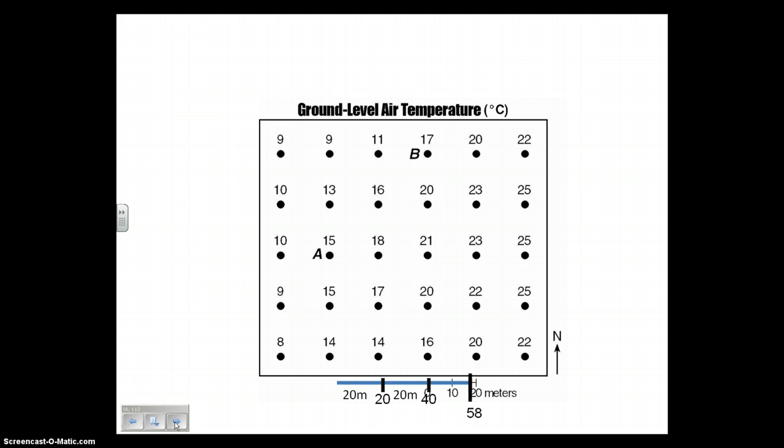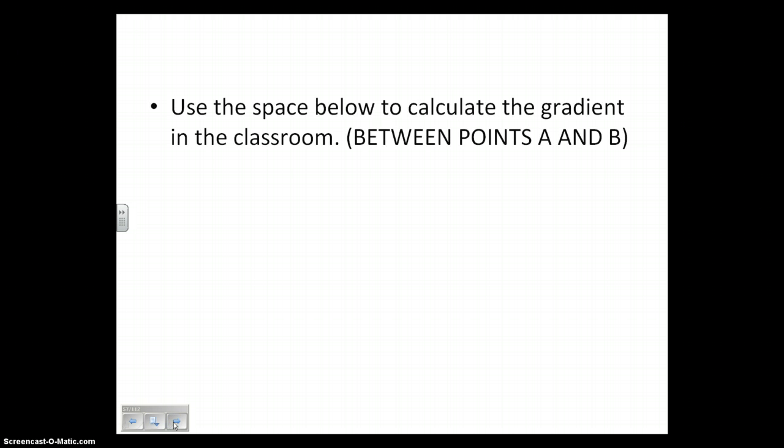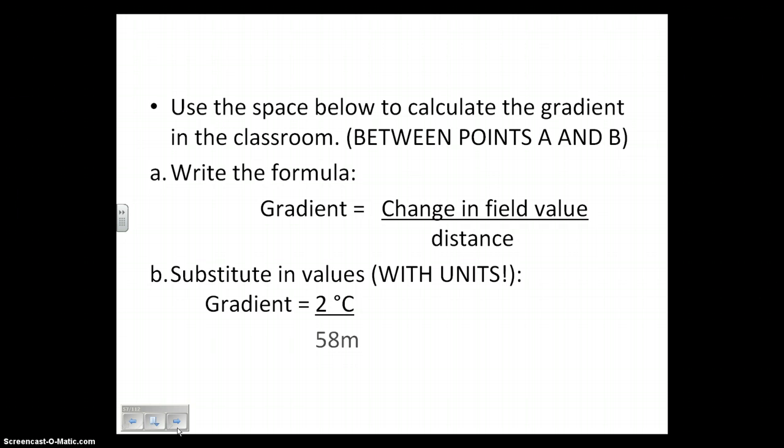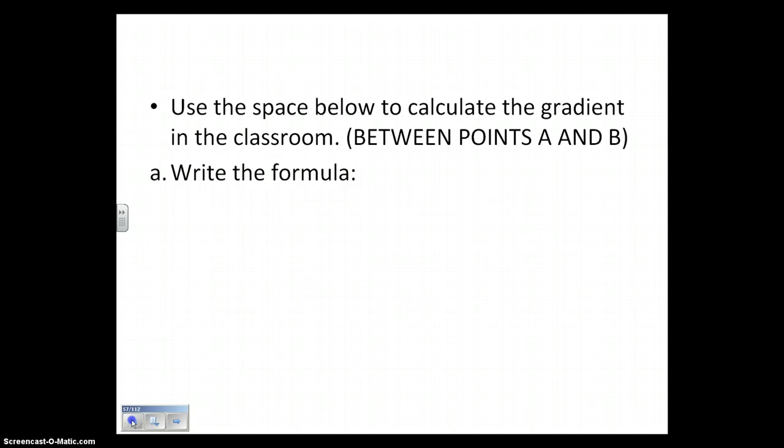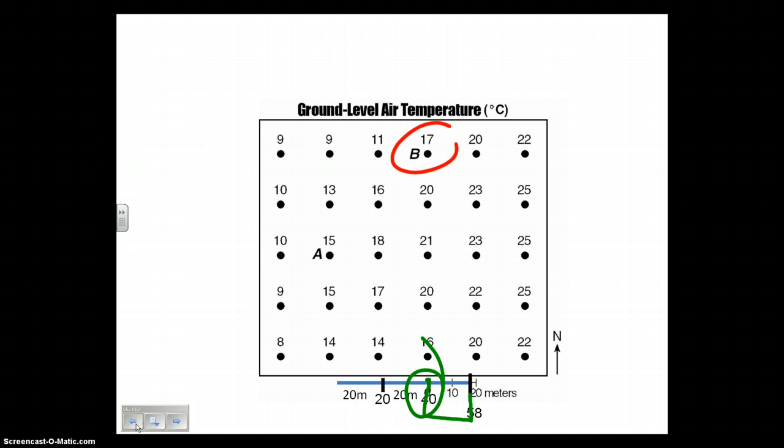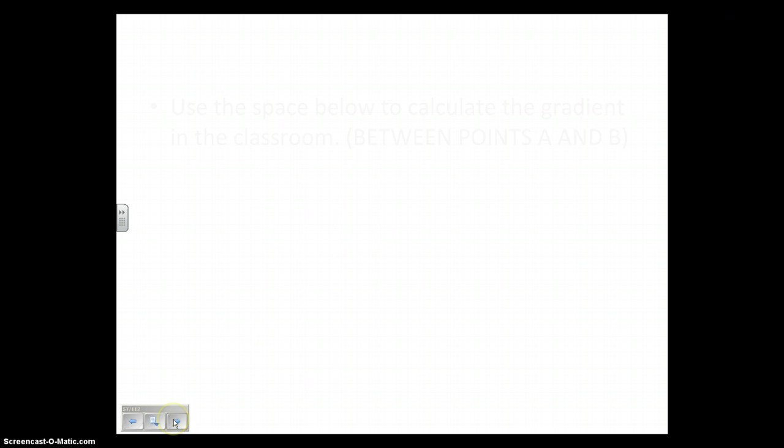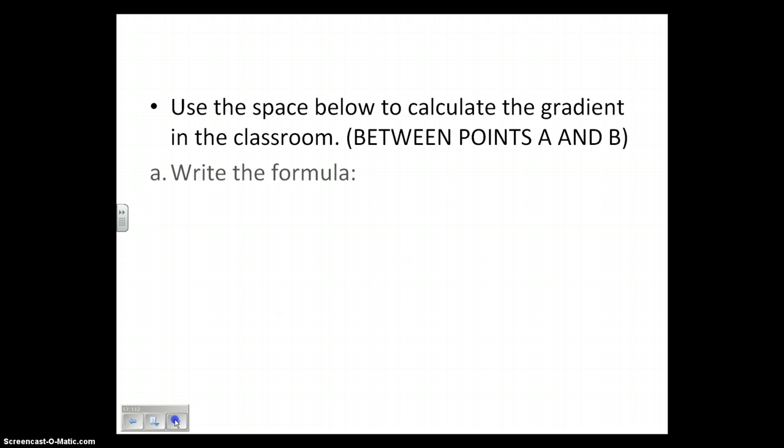Let's put our information into the equation. We wrote the formula and we set it up. On the top we have 2 degrees - that's 17 minus 15, divided by the distance which we just measured was 58. On the top we had degrees Celsius, on the bottom we had meters. 17 minus 15 is going to give us that 2 degrees Celsius as a difference in field value.